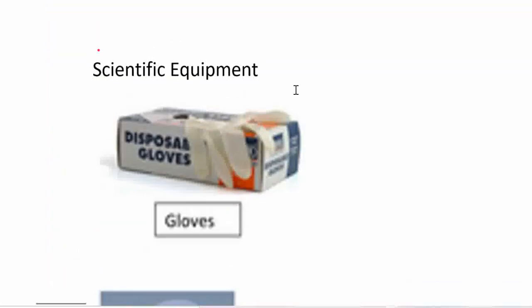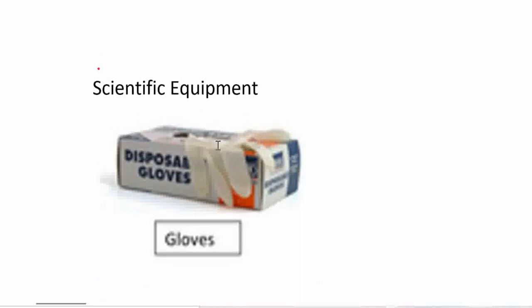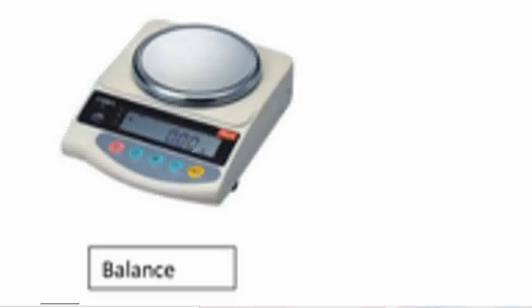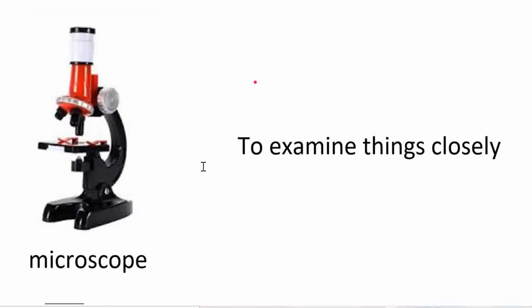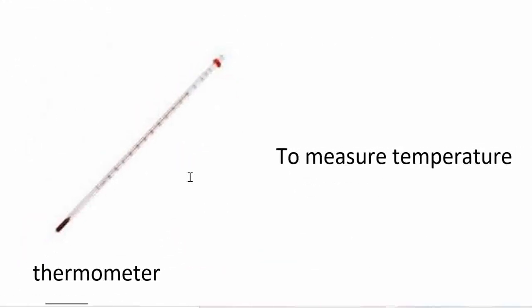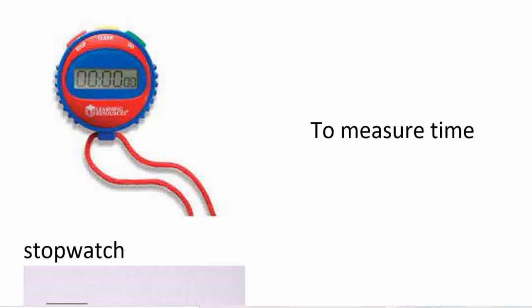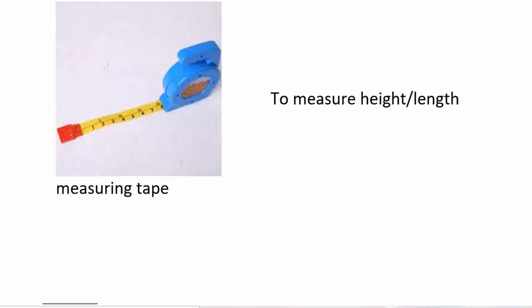To do science experiments, we need scientific equipment. We start with gloves to protect hands. Next is filter paper — to filter liquid from undissolved solid. Then a balance to measure the mass, a microscope to examine things closely, a thermometer to measure the temperature, a stopwatch to measure the time, and a measuring tape to measure the height or length.